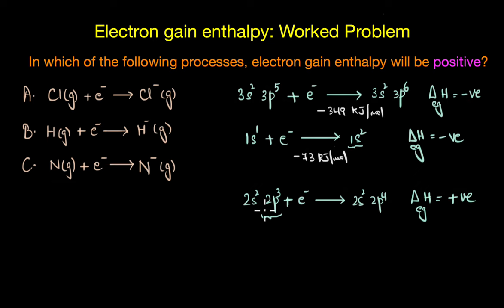And the energy required to bring about this conversion is about plus 7 kJ per mol. As you can see here electron gain enthalpy will be positive for nitrogen.